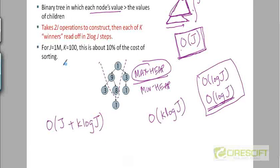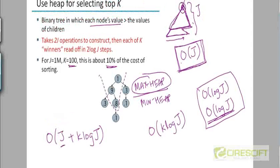If the value of J is for example a million and the value of K is a hundred, then the amount of time that this will take if you actually use a heap will be about 10% of the cost that you would have incurred if you had done the full sorting.